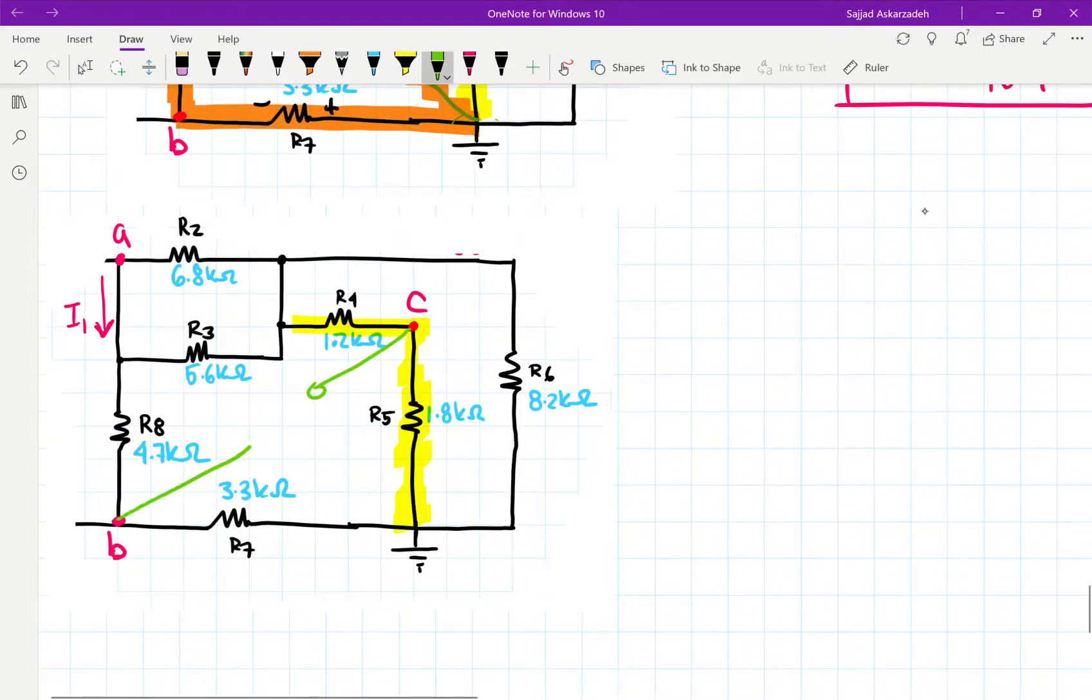Where it's the voltage at C with respect to B. So B is going to be our negative, and this is going to be our positive. And this is VCB. And this is going to be our loop.